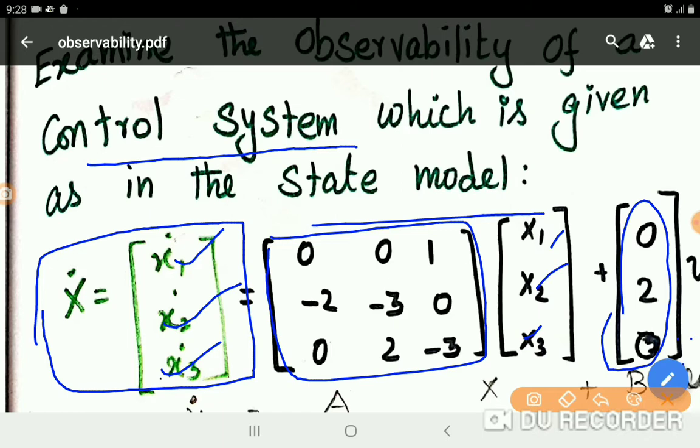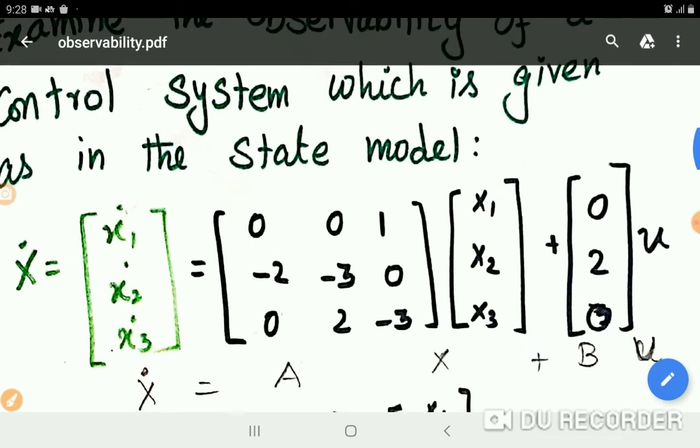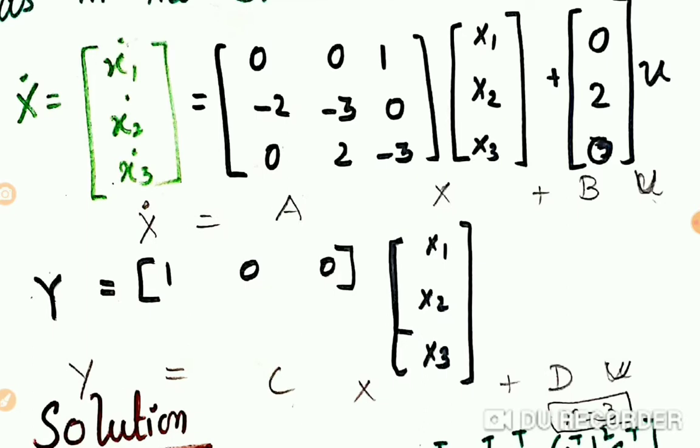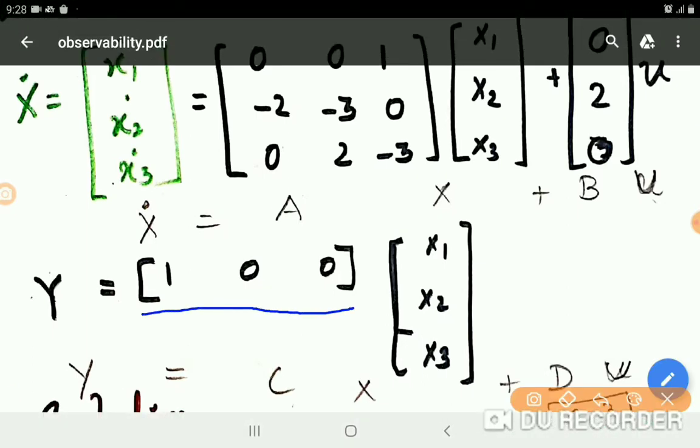Then output equation given as C matrix as well as inputs x1, x2, x3. Then there is no D matrix in the output equation.